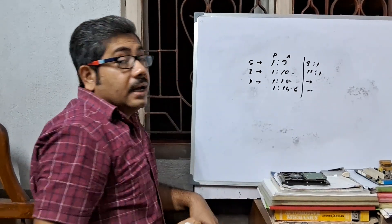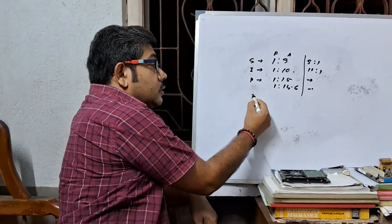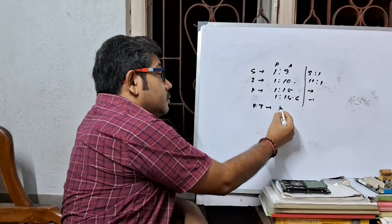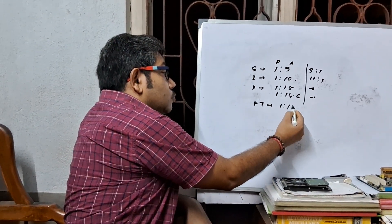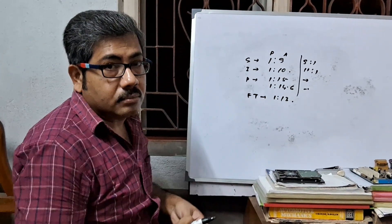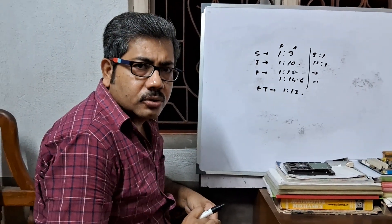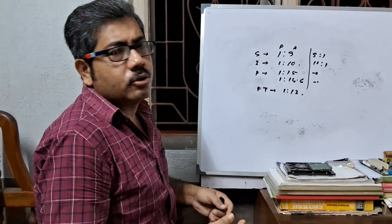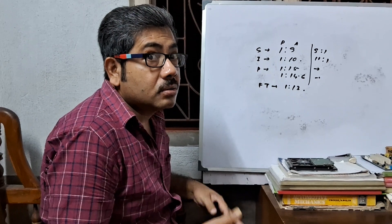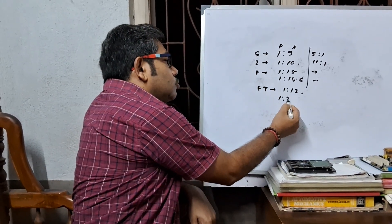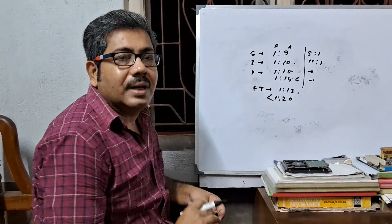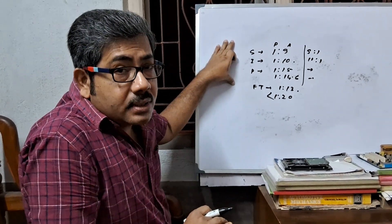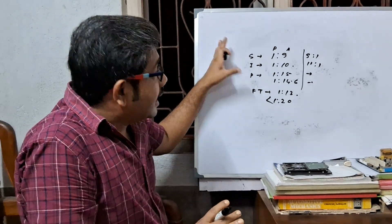During full throttle condition the ratio is 1:13. The air-fuel ratio below which a petrol engine cannot run is 1:20 or less. These are the different loading conditions, and the Carburetor is a device which mixes air and petrol at the appropriate ratio for each condition.